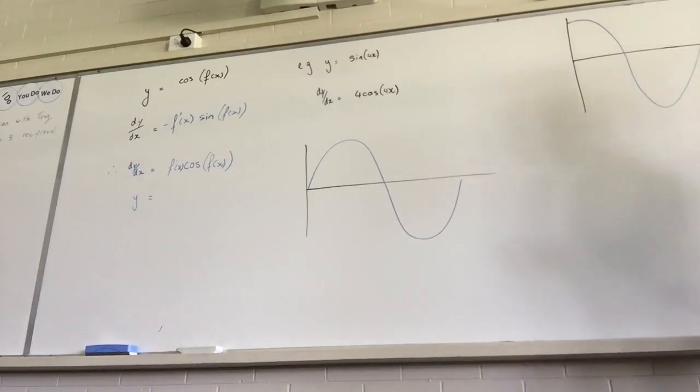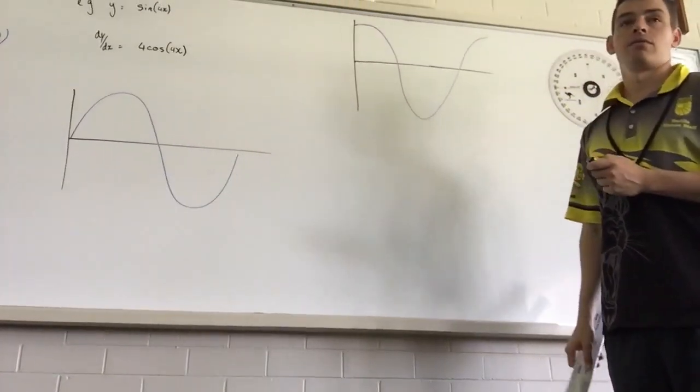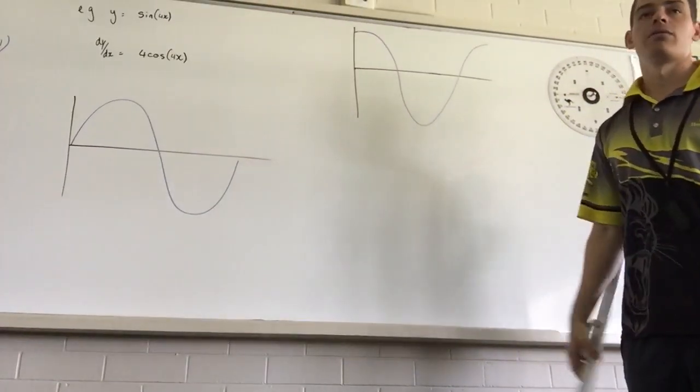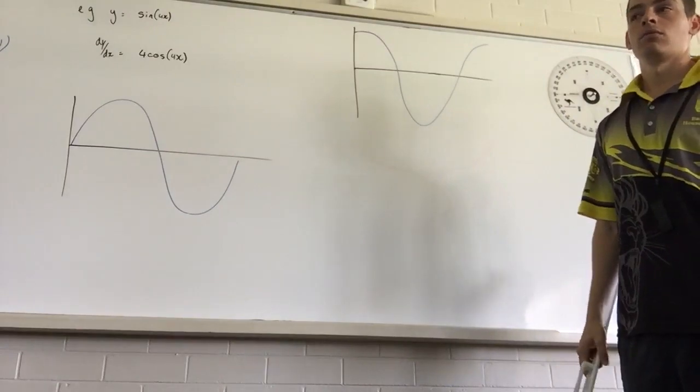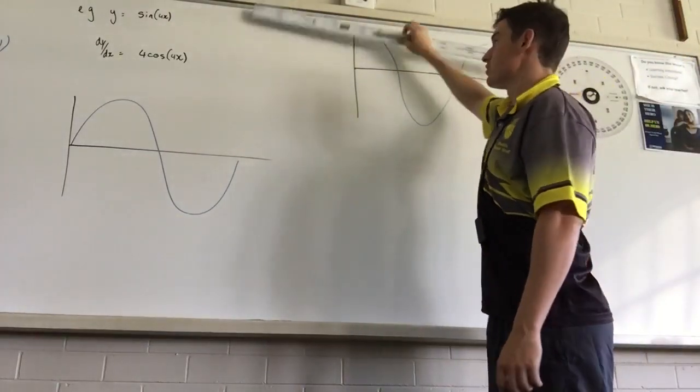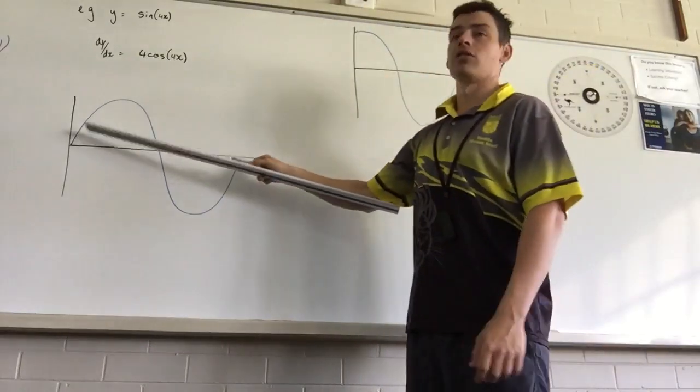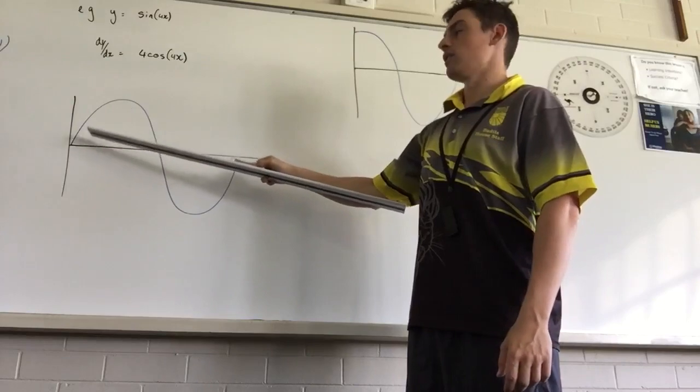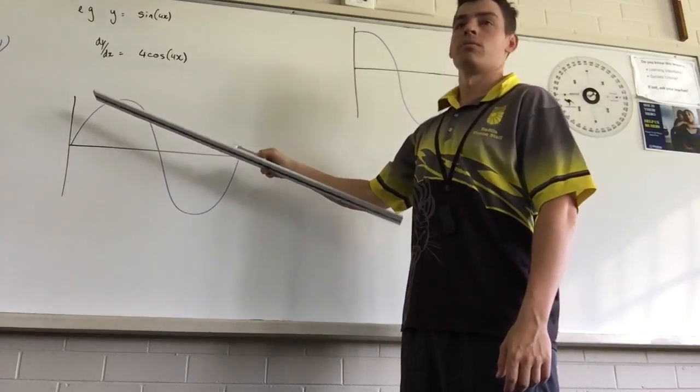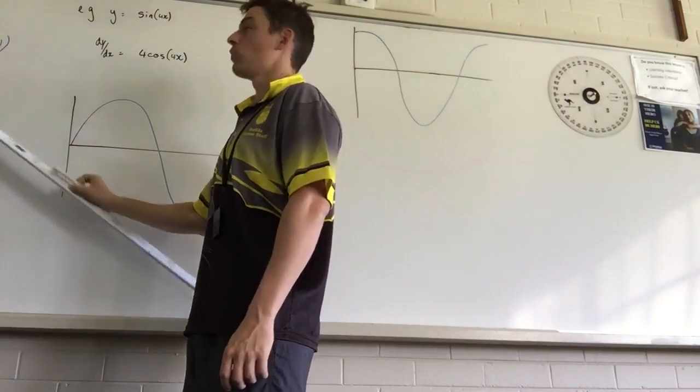So then why does cos, the derivative of cos function, why does that become a negative? Why is that a negative sign, not a positive sign? It starts at zero. So my gradient starts at zero, and then goes down as it goes through, doesn't it? That's a positive sine function. Is that going negative or positive initially? Positive. So it should go negative, shouldn't it? That's why it's a negative sign.